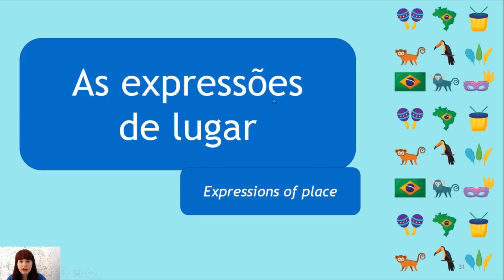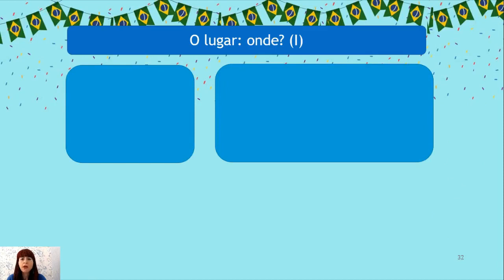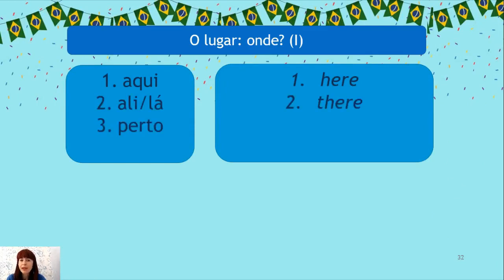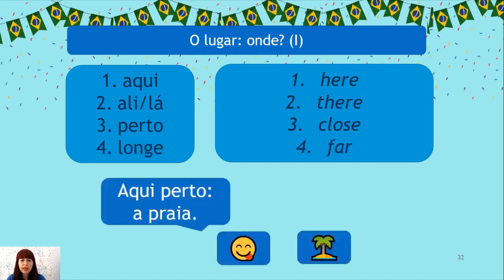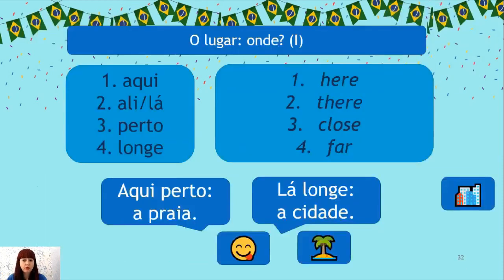To finish, as expressões de lugar — onde, where: Aqui, ali, lá — they indicate proximity. Perto means close (aqui perto — real close to me), and longe means far (lá longe — far away from me).